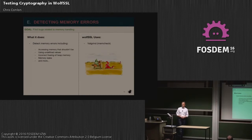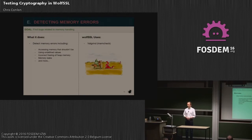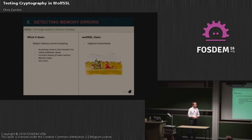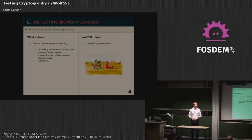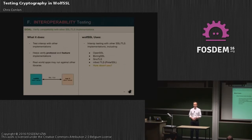Memory errors are another big concern, especially in an SSL or crypto library. You don't want a segfault or your program to crash when it's performing a security operation — making a handshake or sending data across a TLS connection. To vet these out we use the Valgrind MemCheck tool. This can detect accessing memory you shouldn't be accessing, incorrectly freeing memory, and finding memory leaks.